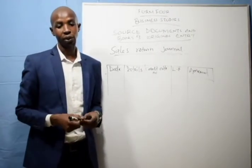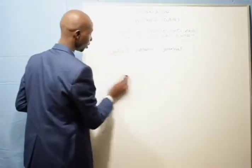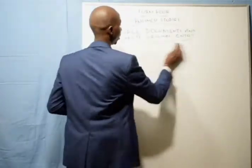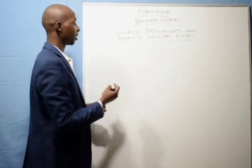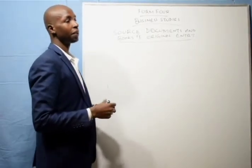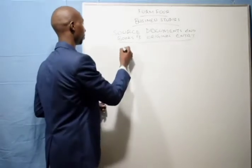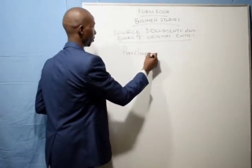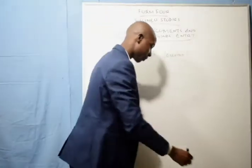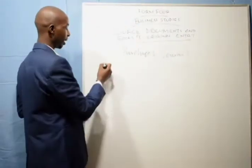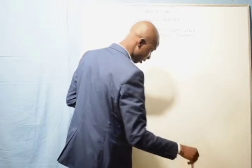Let's look at another book of original entry — the purchases journal. The aim of business is to make profit. How do you make profit? Through purchasing and selling. So when you purchase, you keep records of the people you have purchased from in a book called the purchases journal. The purchases journal is a book used to record all purchases that have been made on credit.